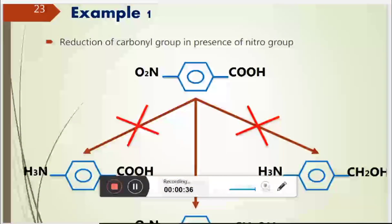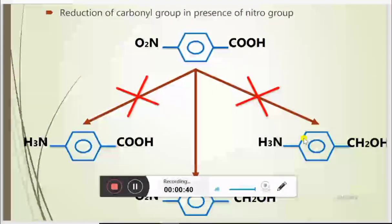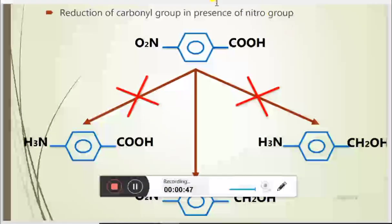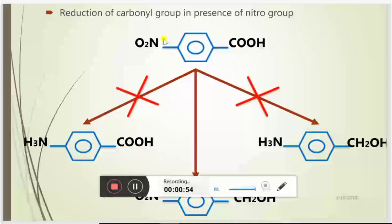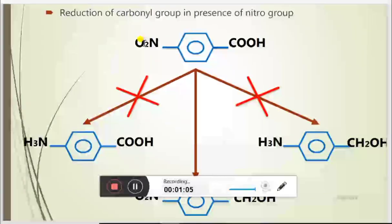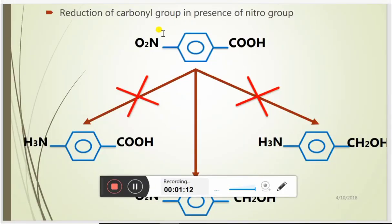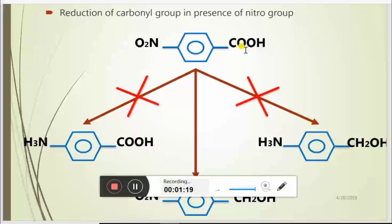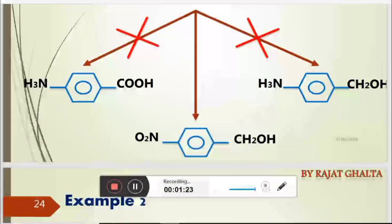For instance, take this bifunctional compound where we have an acid group and a nitro group. If this is subjected to reduction, there are a number of possibilities: first, the nitro group is reduced while the acid group is unaffected; second, the acid group is reduced while the nitro remains; third, both are reduced; or fourth, only one is reduced and the other remains intact.